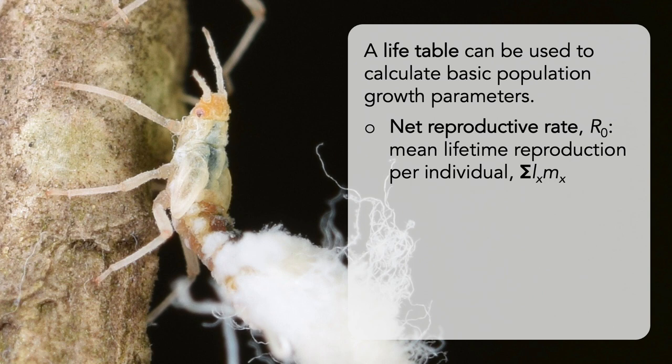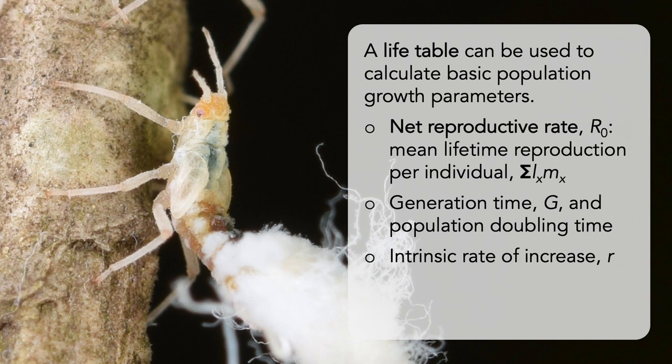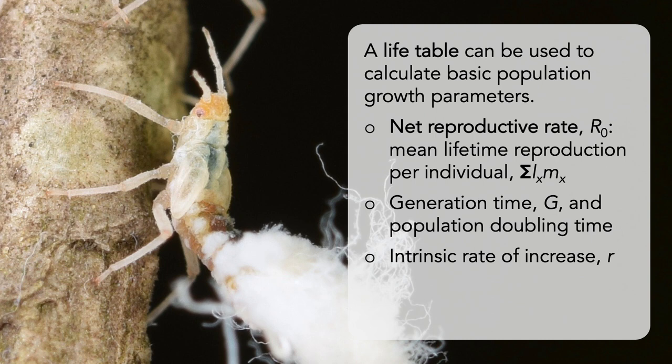Related parameters include generation time, G, and population doubling time. One of the most important parameters in studies of population dynamics is the intrinsic rate of increase, R, which relates population change by a difference in birth and death rates. If R is positive, the population is growing; if R is negative, the population is in decline; and if R is zero, the size of the population is stable. Looking back to our beach blight aphids, they have a high R0, short generation time, and high intrinsic rate of growth.